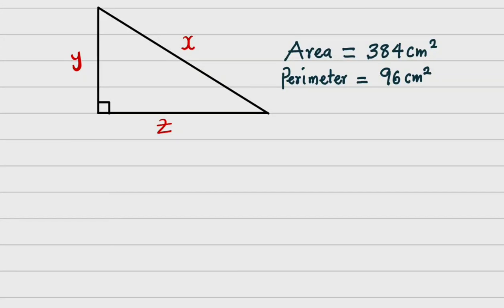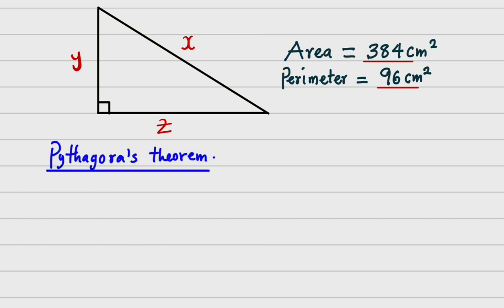Hello students, welcome to class. From this question we are given area which is 384 centimeters squared, and the perimeter which is 96 centimeters. We are to find the values of x, y, and z. The first thing we are going to consider is the Pythagorean theorem.